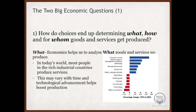The first big question that we ask in economics is: how do choices end up determining what, how, and for whom goods and services get produced? So what determines whether we build better homes or develop sporting facilities? Or should we produce more food or more retail services? How do these choices change over time, and how are they affected by the ongoing changes in technology that make an even wider array of goods and services available to us?